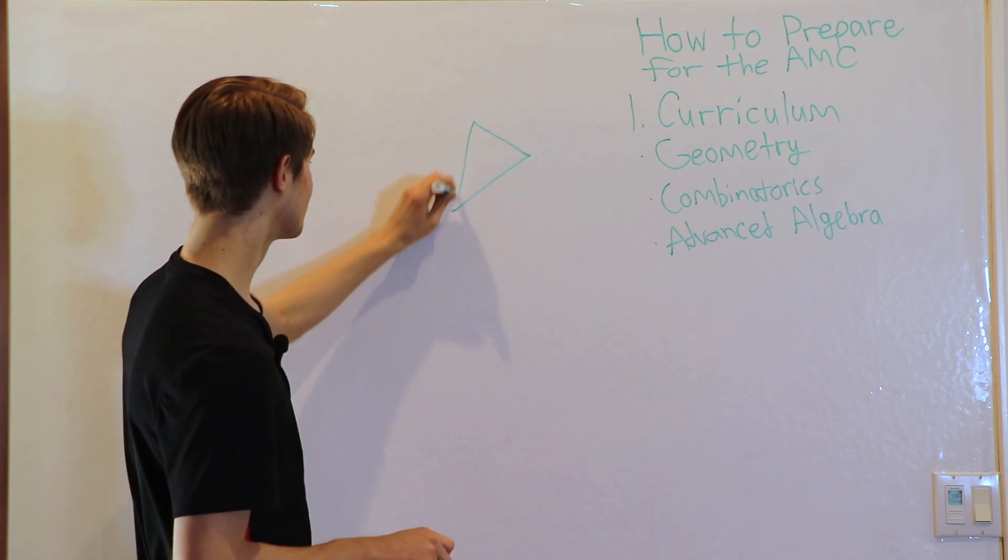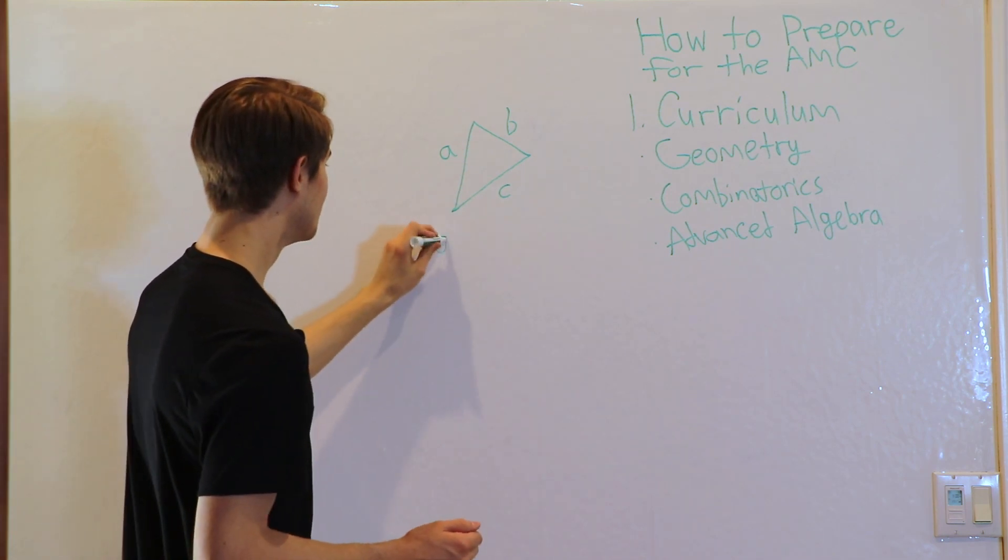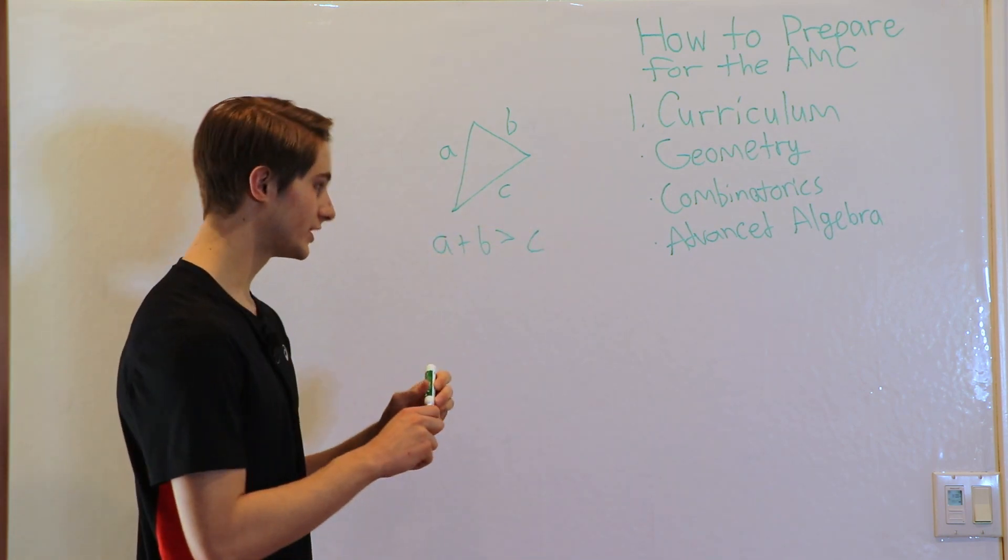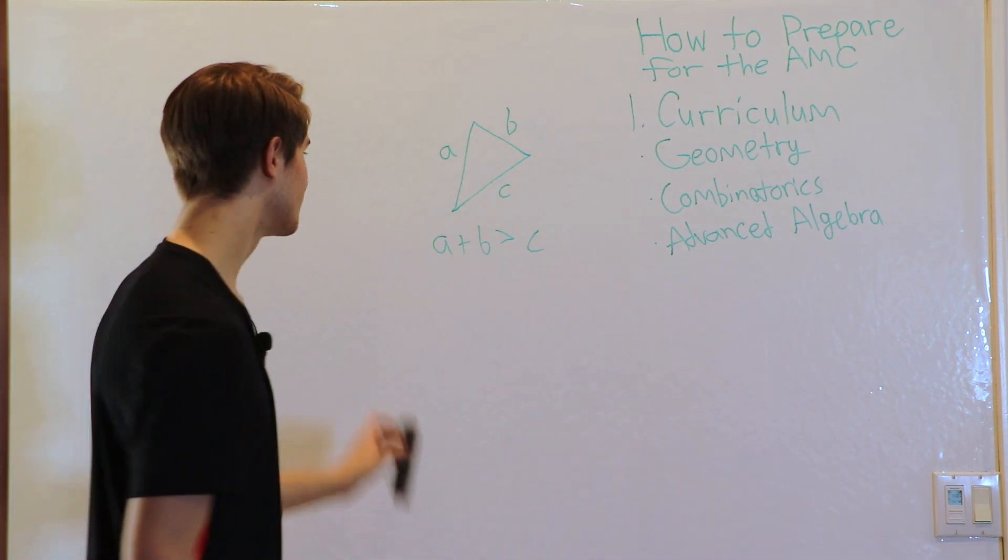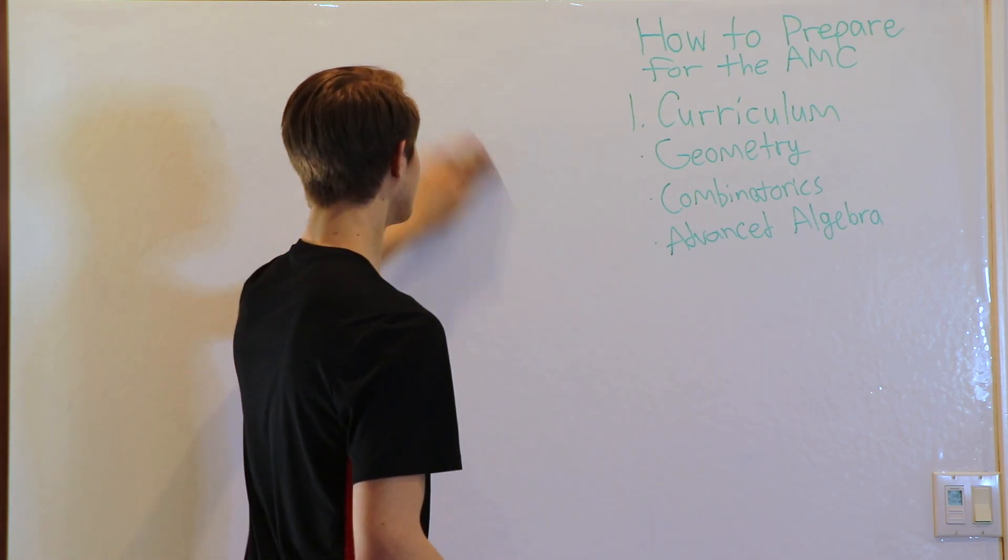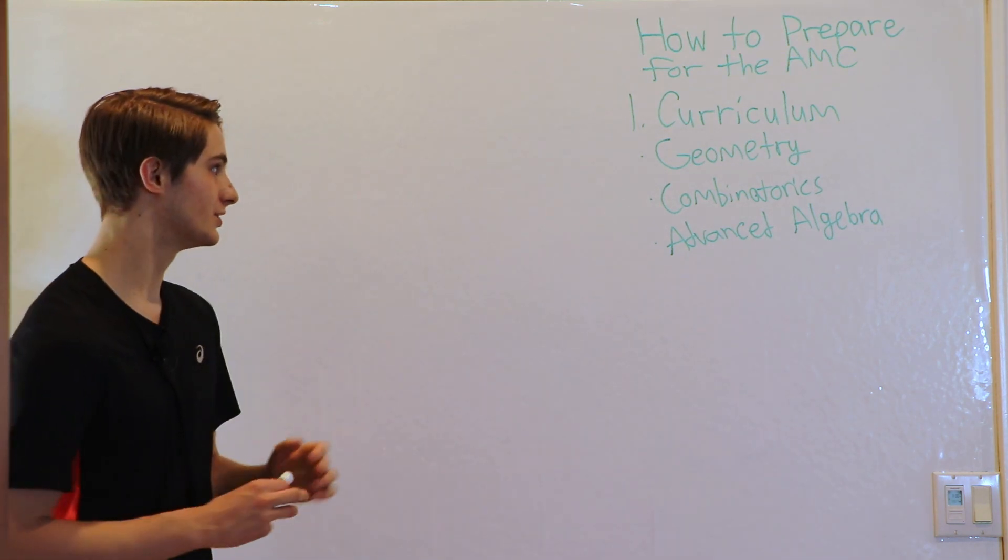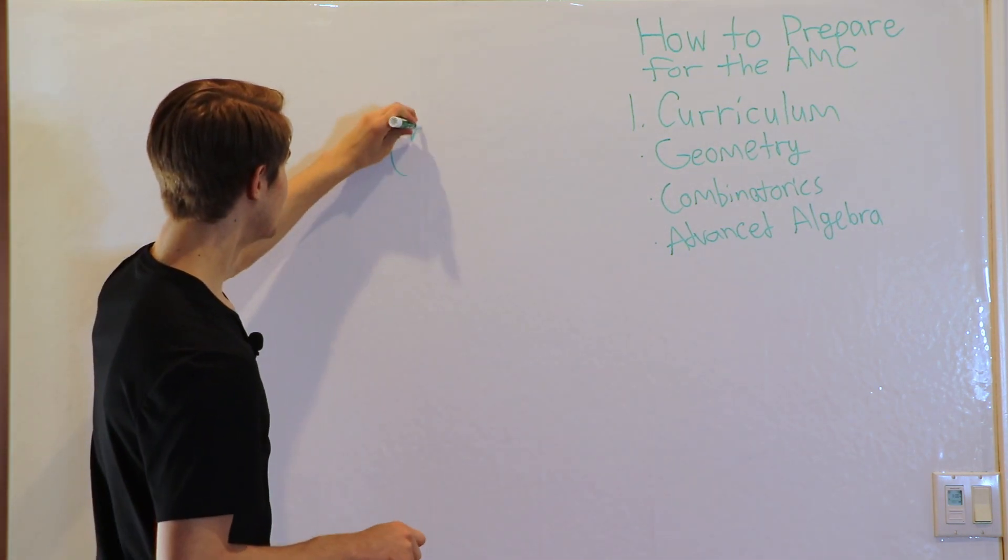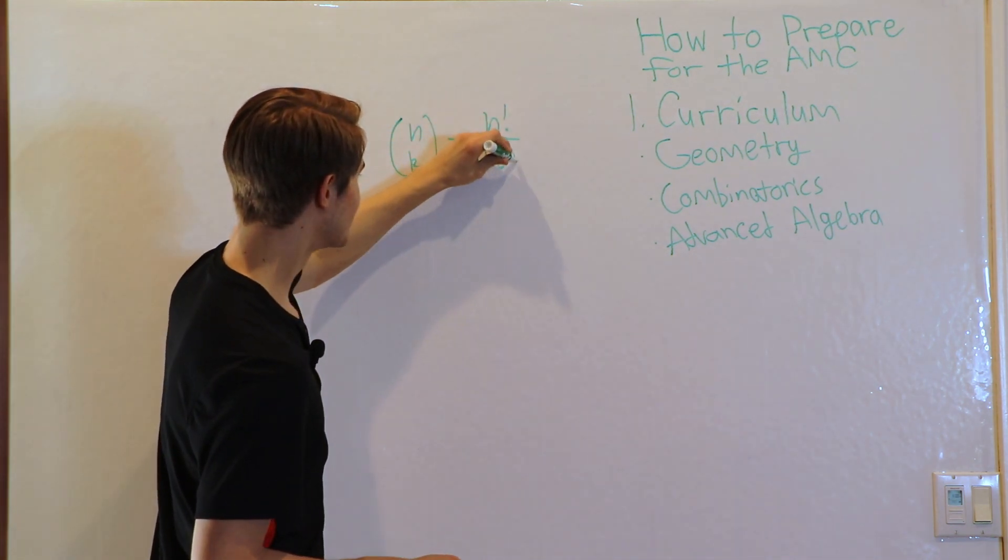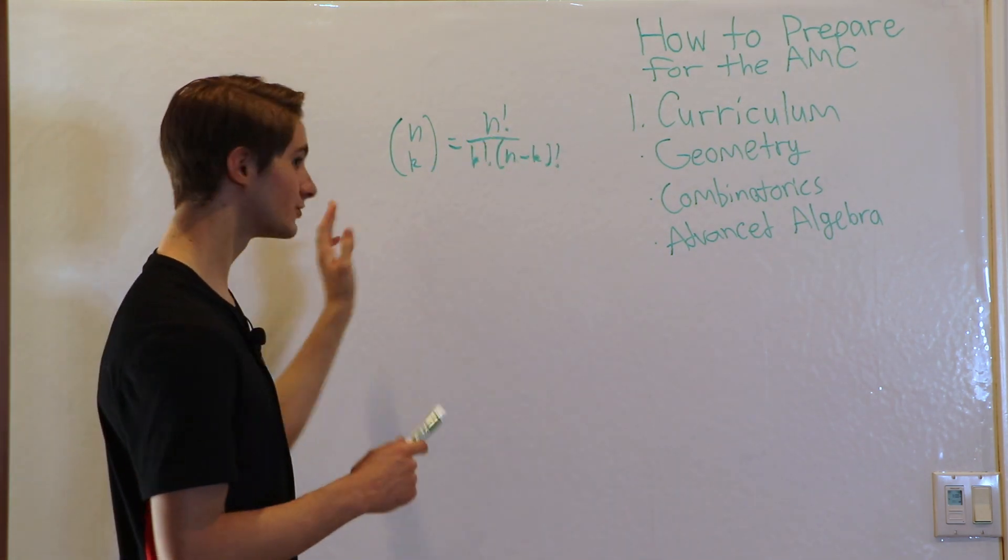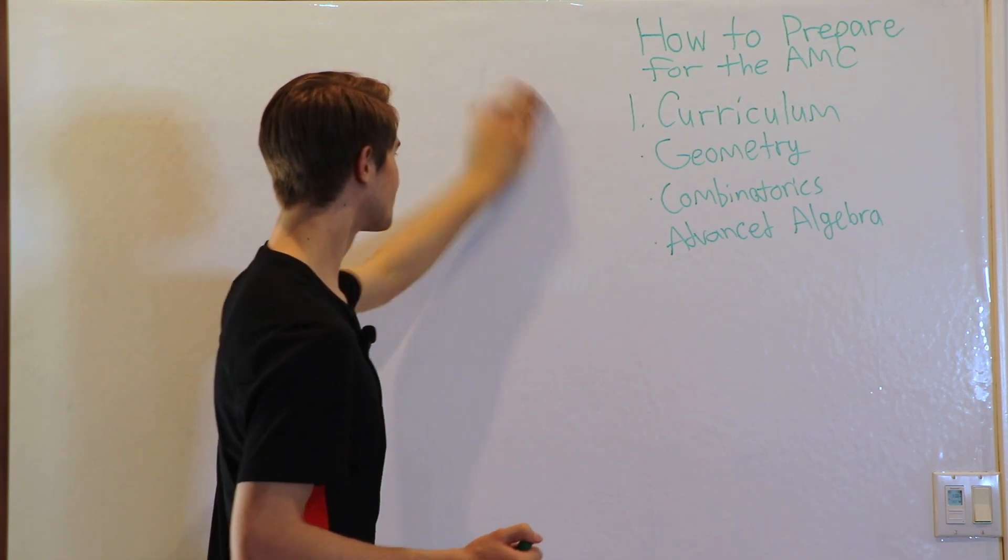So you're going to want to know things like, for example, in geometry if you have a triangle with sides a, b, and c, you want to know a plus b is greater than c. This is the triangle inequality. You also want to know things like the law of sines, the law of cosines, the circle formulas, and all that kind of stuff. Again, the more advanced the better, but you want to start out with just a base knowledge. When it comes to combinatorics, you want to know things like n choose k equals n factorial over k factorial times n minus k factorial. That's a formula that you'll want to know. And there are many more like that. Same goes for advanced algebra.